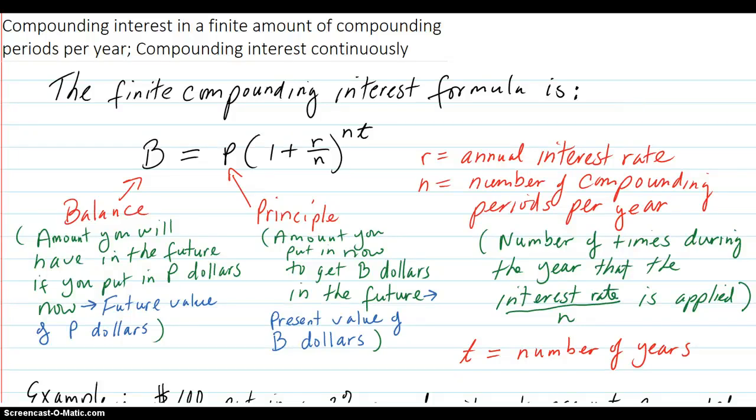Compounding interest in a finite amount of compounding periods per year and compounding interest continuously. The finite compounding interest formula that you've seen before is here.